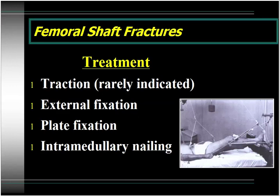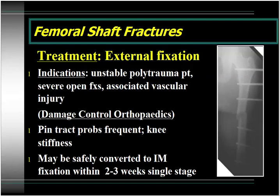Traction is really of historical interest only for femoral shaft fractures. External fixation can be a very important adjunct, particularly in damage control orthopedics. Plate fixation is indicated in certain situations. The gold standard is intramedullary nailing. External fixation is important in very unstable polytraumatized patients, patients with severe open fractures with massive soft tissue injury, or patients with associated vascular injuries requiring vascular repair. The patient with a severe closed head injury who is hemodynamically unstable should not undergo a prolonged intramedullary nailing; that patient would greatly benefit from a simple two- or four-pin external fixator to realign and maintain length and alignment of the femur until the patient is medically stable.